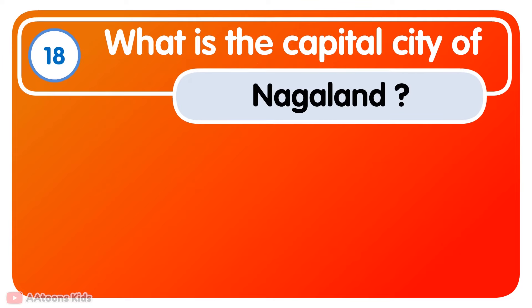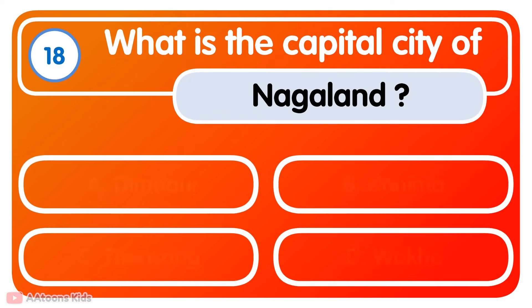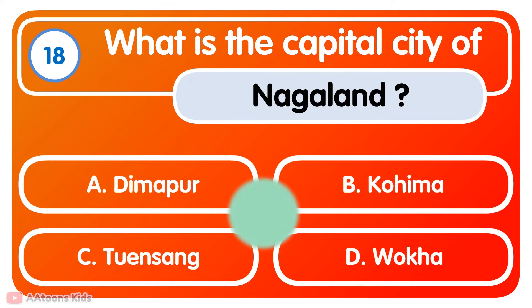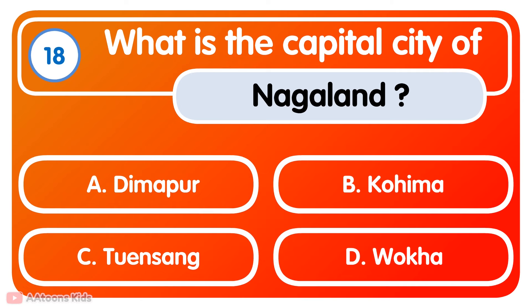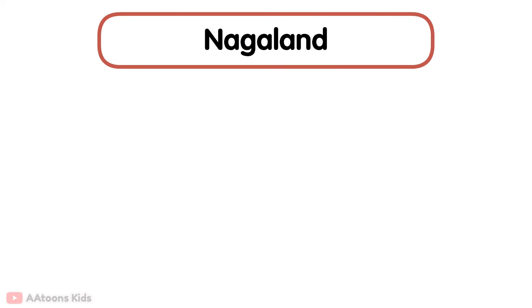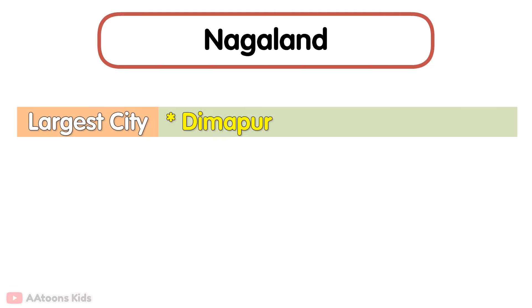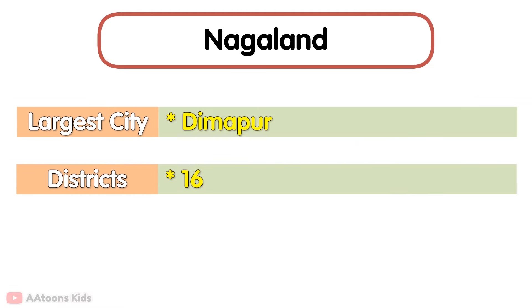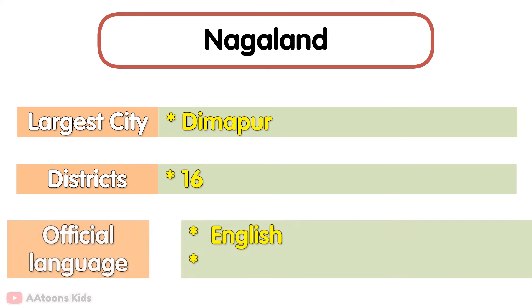What is the capital city of Nagaland? Kohima. Kohima is the capital city of Nagaland. The largest city in Nagaland is Dimapur. It has a total of 16 districts. Its official language is English.